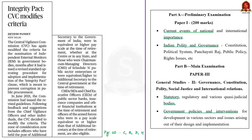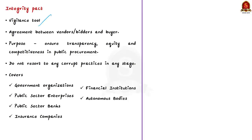Our next discussion is based on an article about the criteria for nomination of Independent External Monitors (IEMs) in government bodies, modified by the Central Vigilance Commission (CVC). These IEMs play an important role in the Integrity Pact. The Integrity Pact is a vigilance tool — an agreement between vendors or bidders and buyers in public procurement, covering government organizations, public sector enterprises, public sector banks, insurance companies, financial institutions, and autonomous bodies.